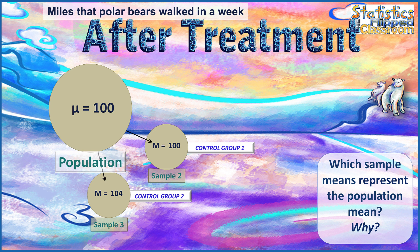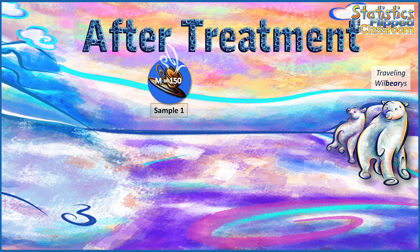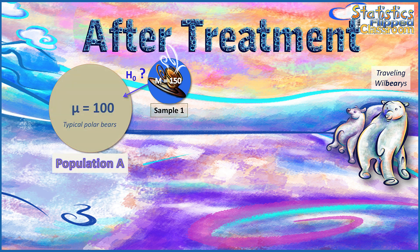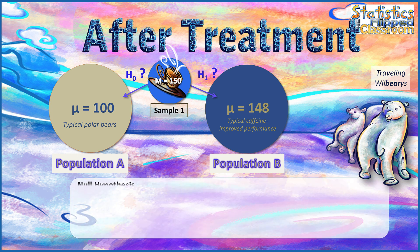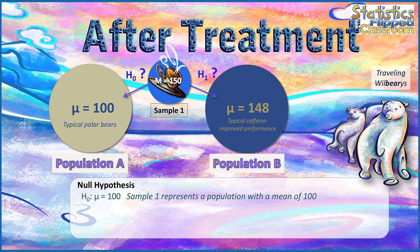Now we look at the experimental group. These polar bears were given caffeine and walked 150 miles per week. We ask: is it more likely that our sample with a mean of 150 represents a population with a mean of 100? Or does 150 better represent a different population — a population of caffeinated polar bears — where a 48% improvement would predict an average of roughly 148 miles per week?